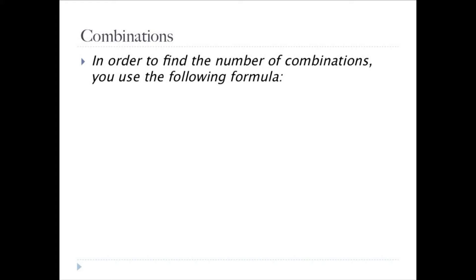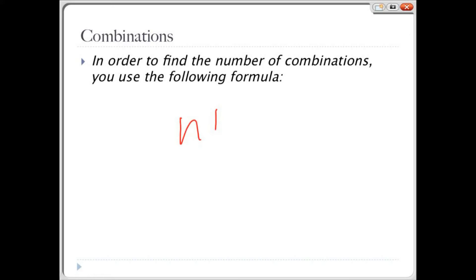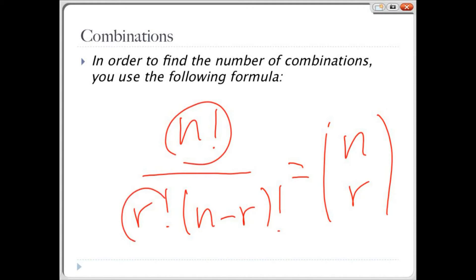In order to find the number of combinations, you can use the following formula. It is n factorial over r factorial times n minus r factorial. This is the same as writing n choose r, where n is the number of things to choose from, and you choose r of them. To shorten this, you can simply put it in parentheses, shown here. And when spoken, you would say n choose r.